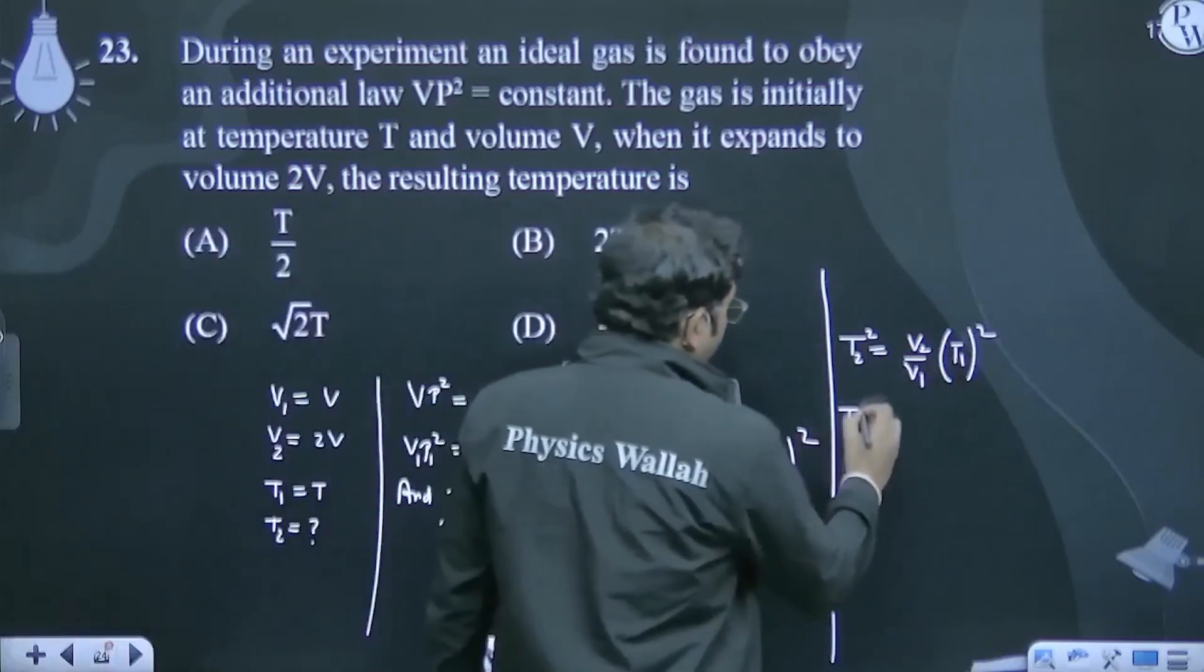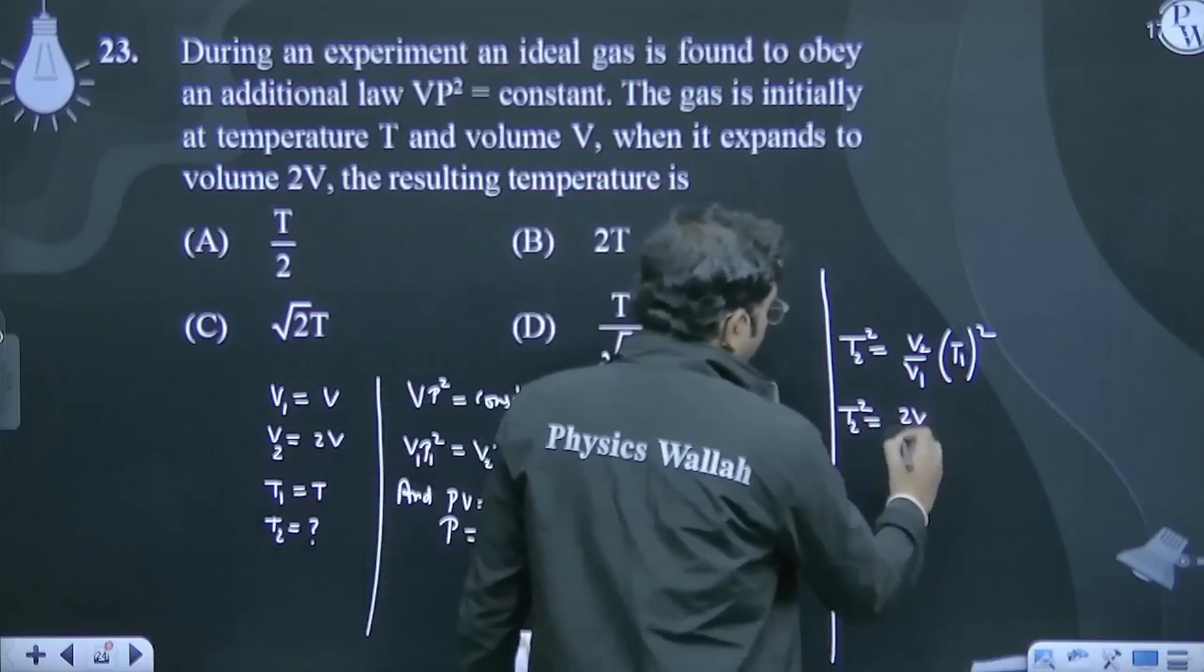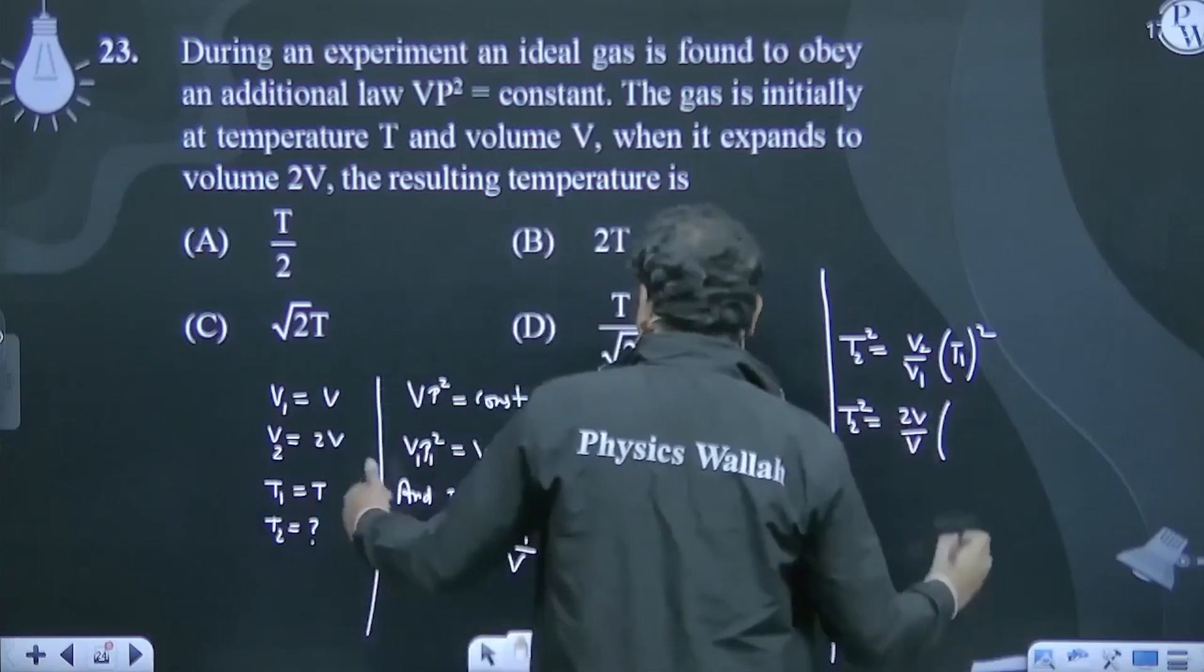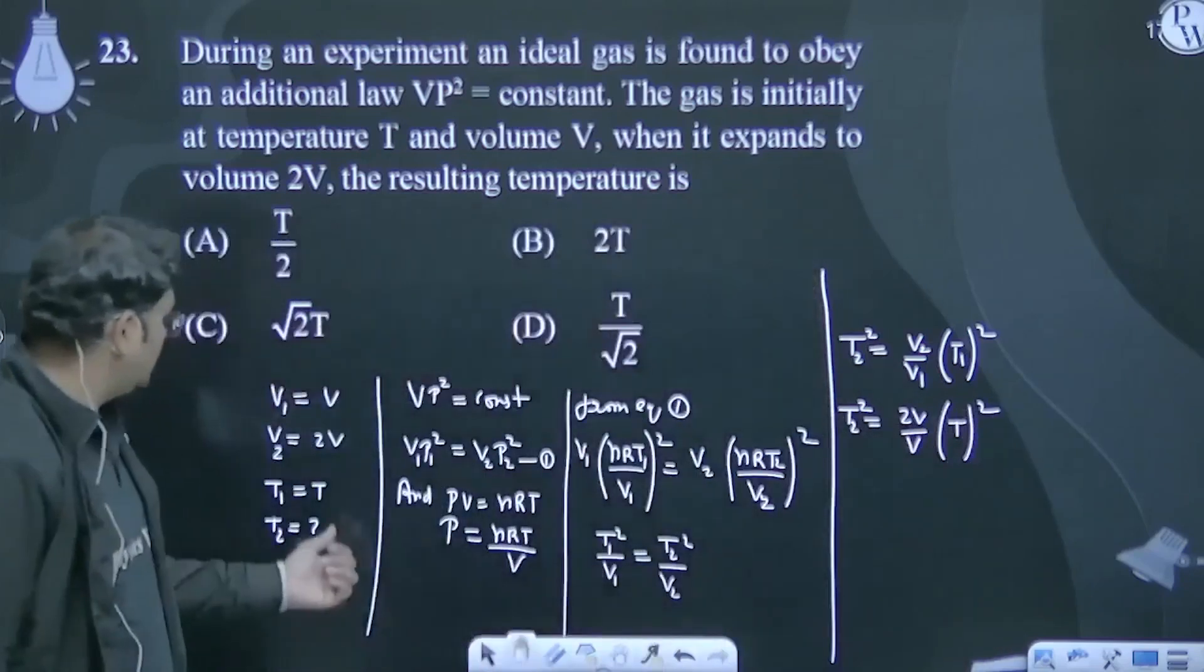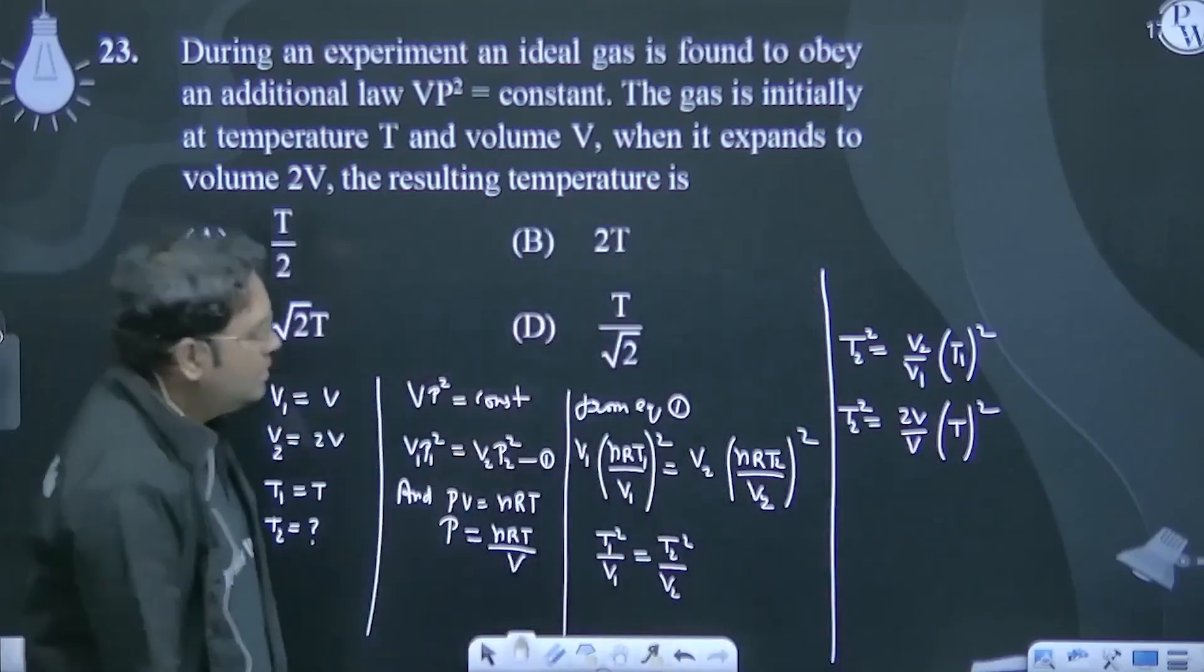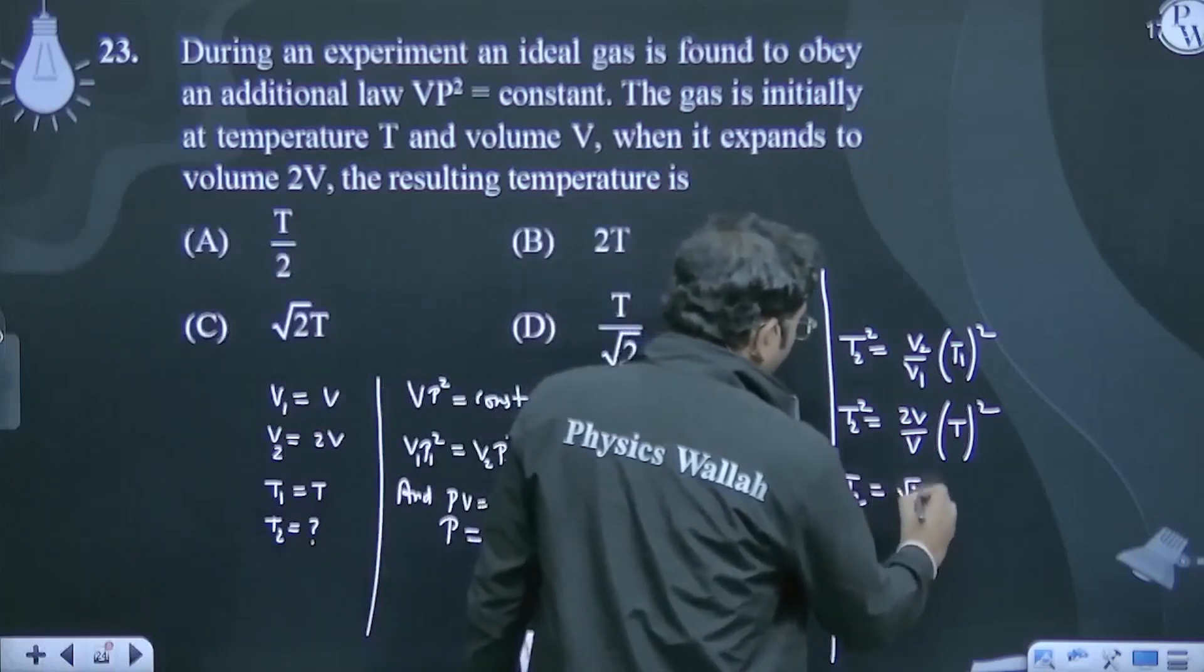Putting values: T₂ squared equals 2V divided by V times T squared. So T₂ equals square root of 2T.